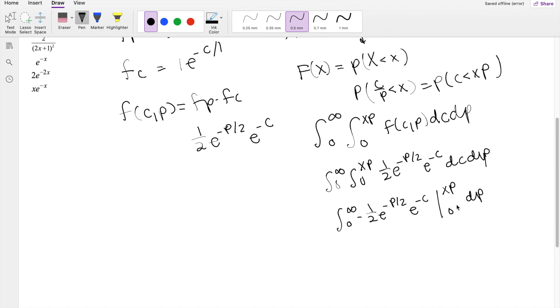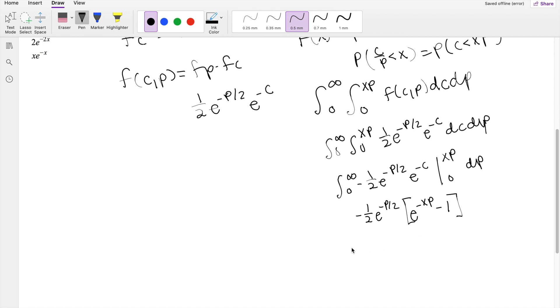Plugging in the xP for C, you get negative 1 half e to the negative P over 2. Plugging in the upper limit, you get e to the negative xP minus e to the 0 is just 1. And then multiplying this out, you get 0 to infinity.